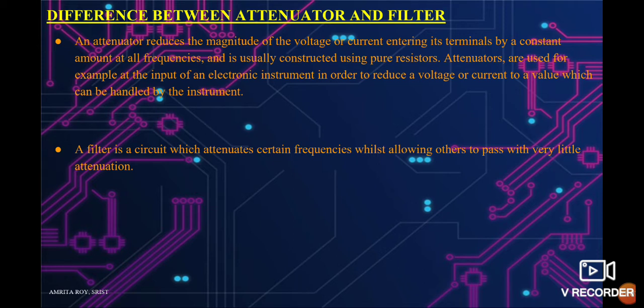Difference between attenuator and filter. An attenuator reduces the magnitude of the voltage or current entering its terminals by a constant amount at all frequencies, and is usually constructed using pure resistors. Attenuators are also used at the input of an electronic instrument to reduce a voltage or current to a value which can be handled by the instrument. A filter is a circuit which attenuates certain frequencies while allowing others to pass with very little attenuation.